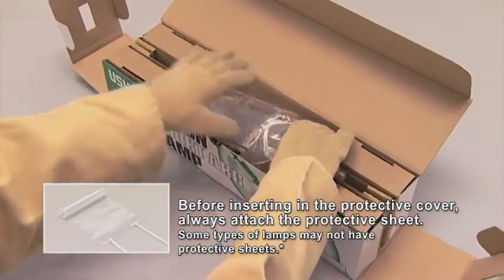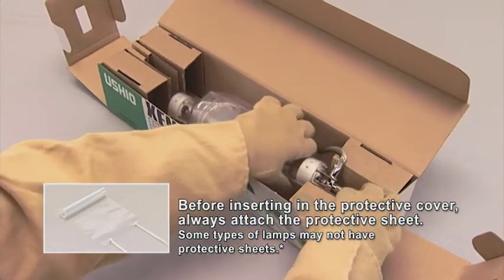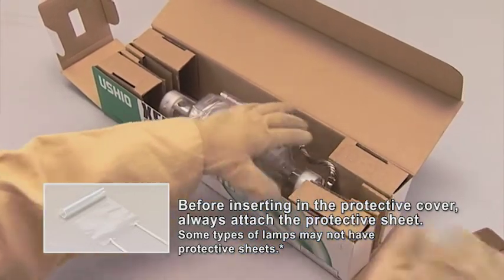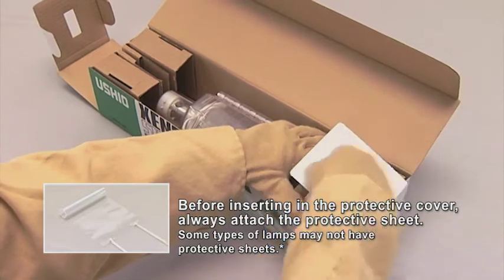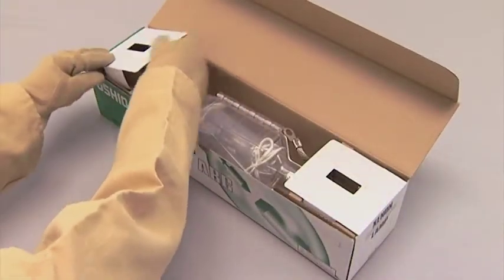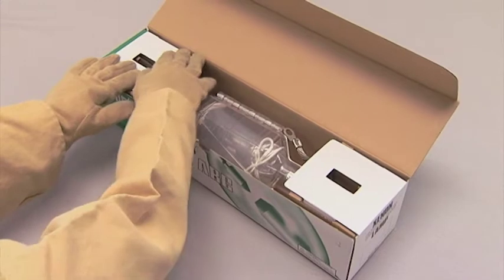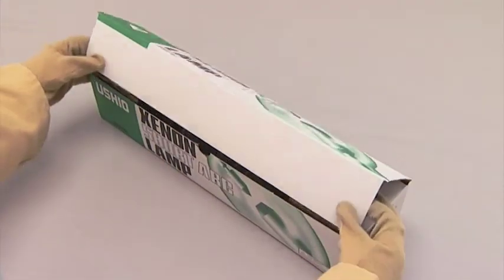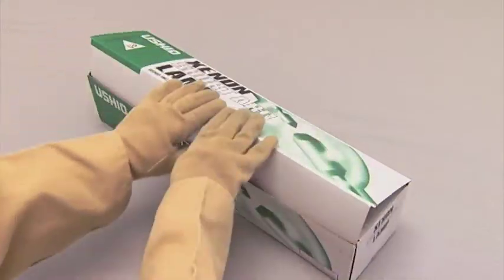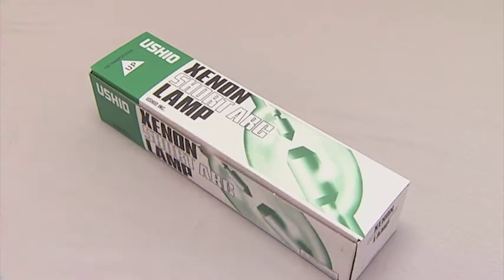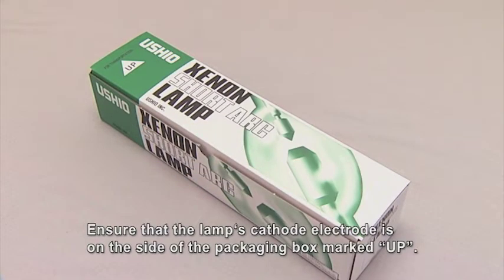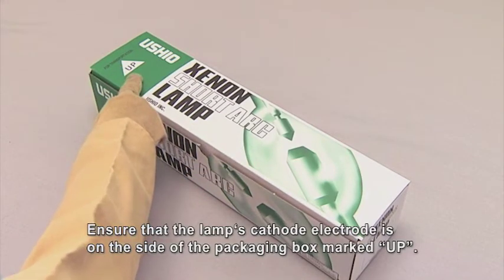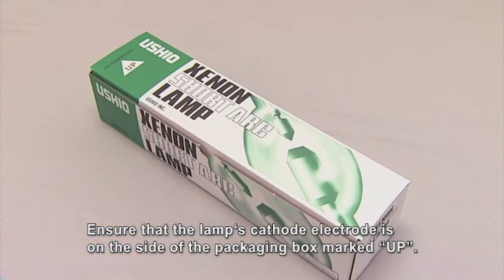Place the used lamp into its original box. Ensure that the lamp's cathode electrode is on the side of the packaging box marked up.